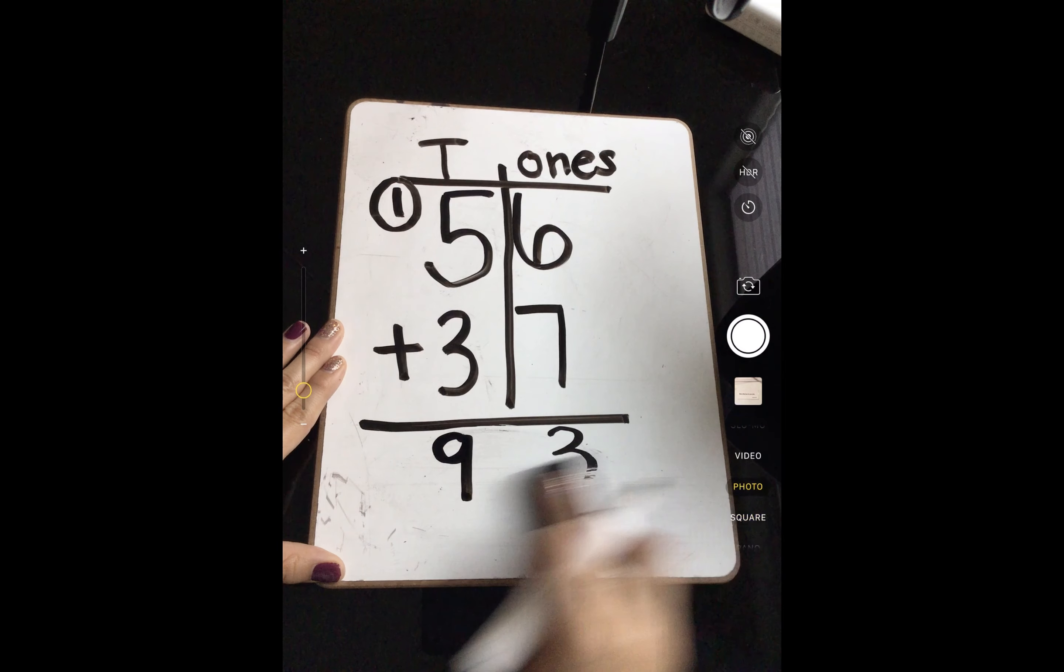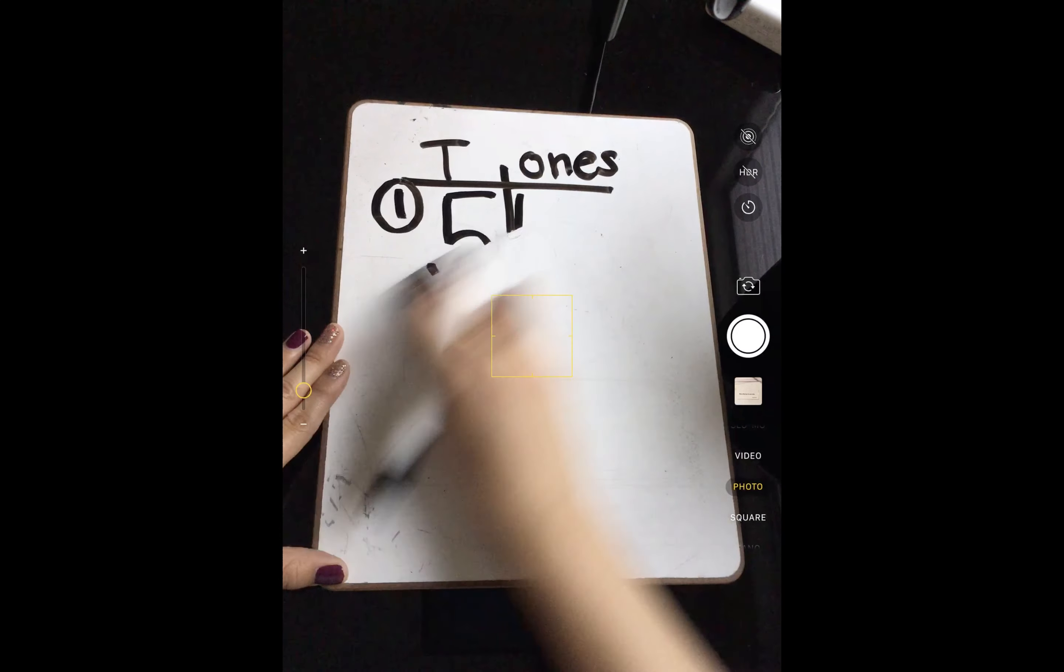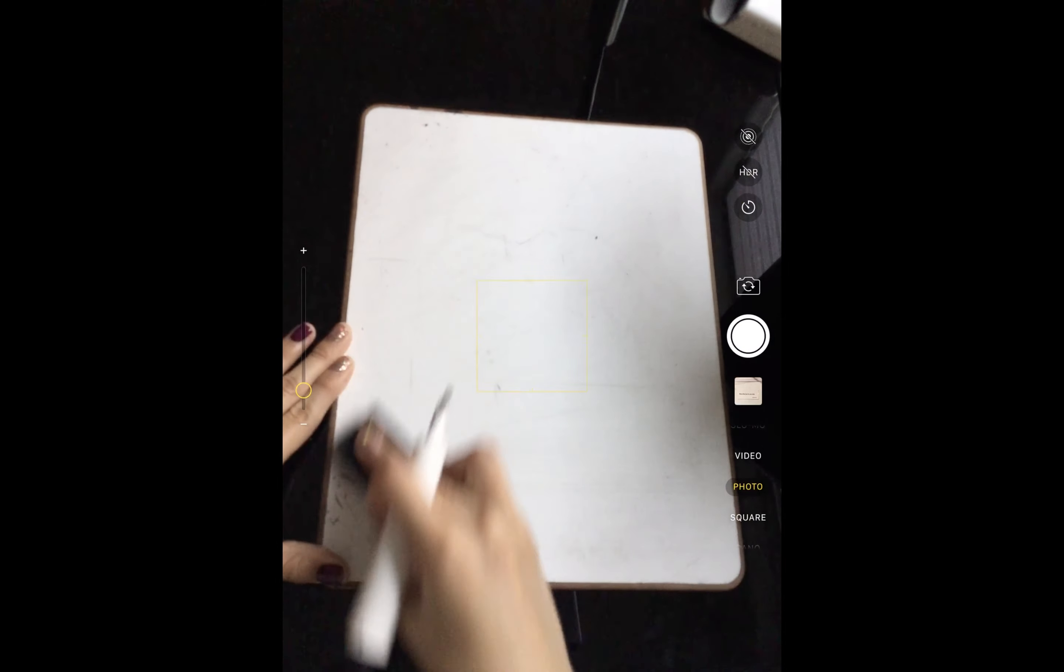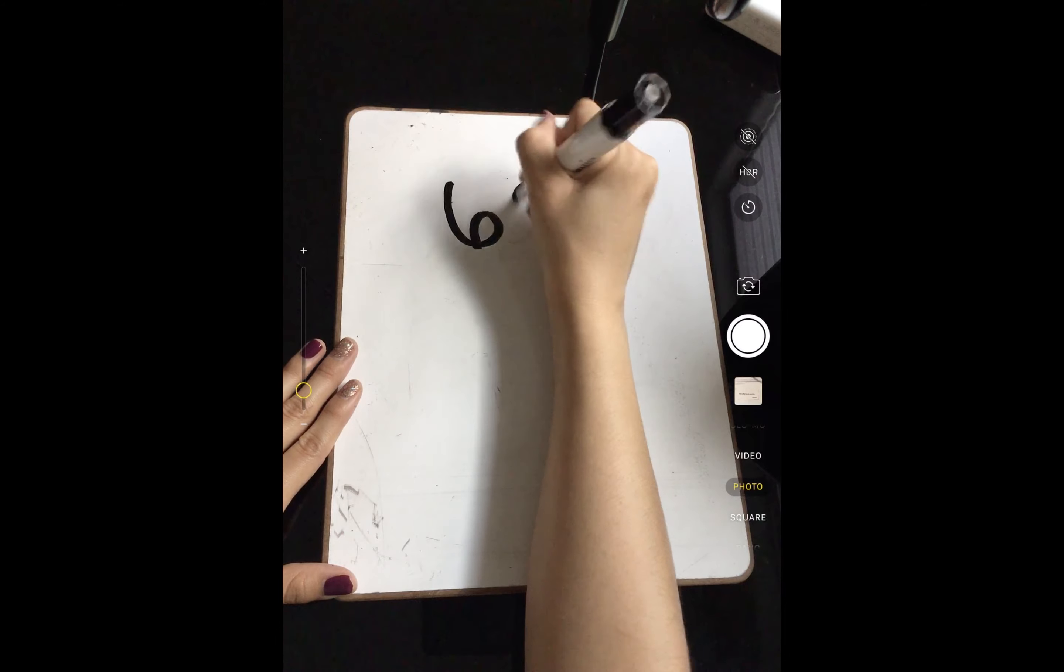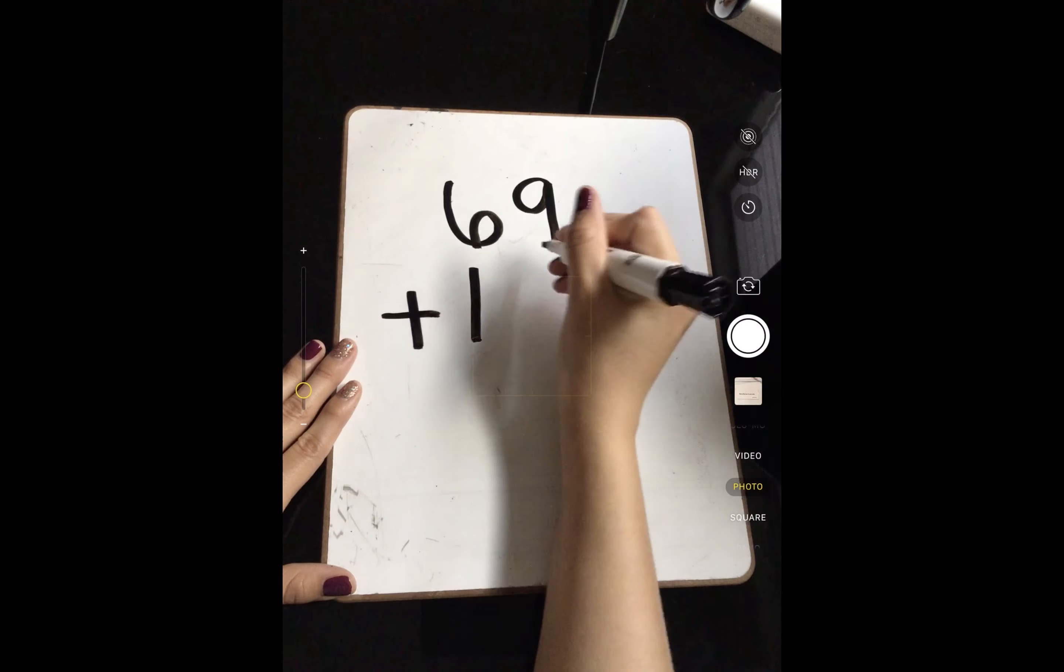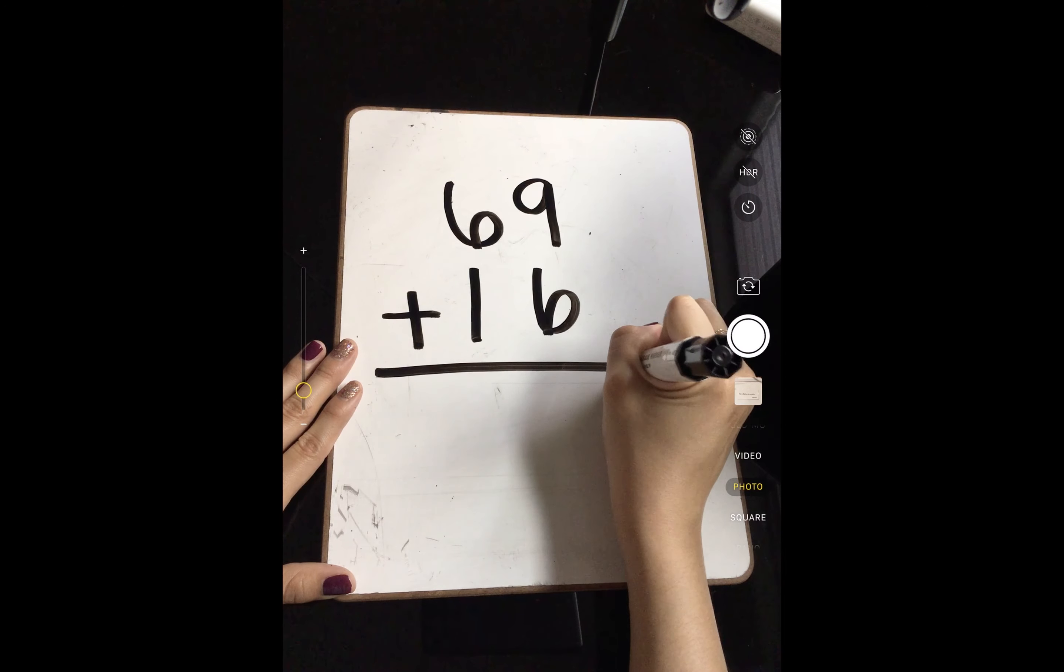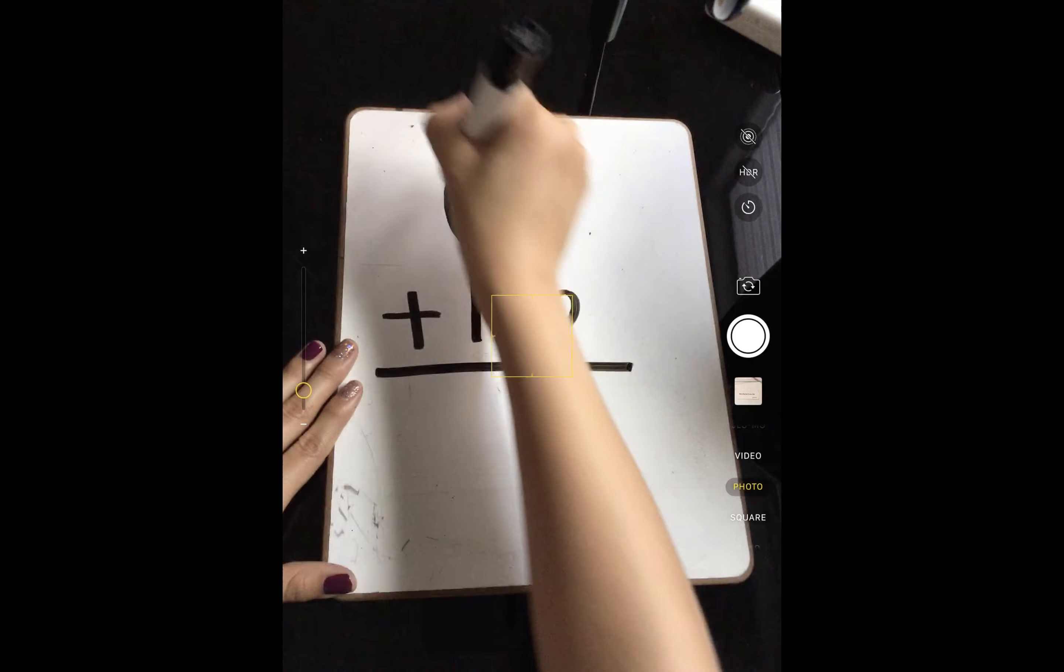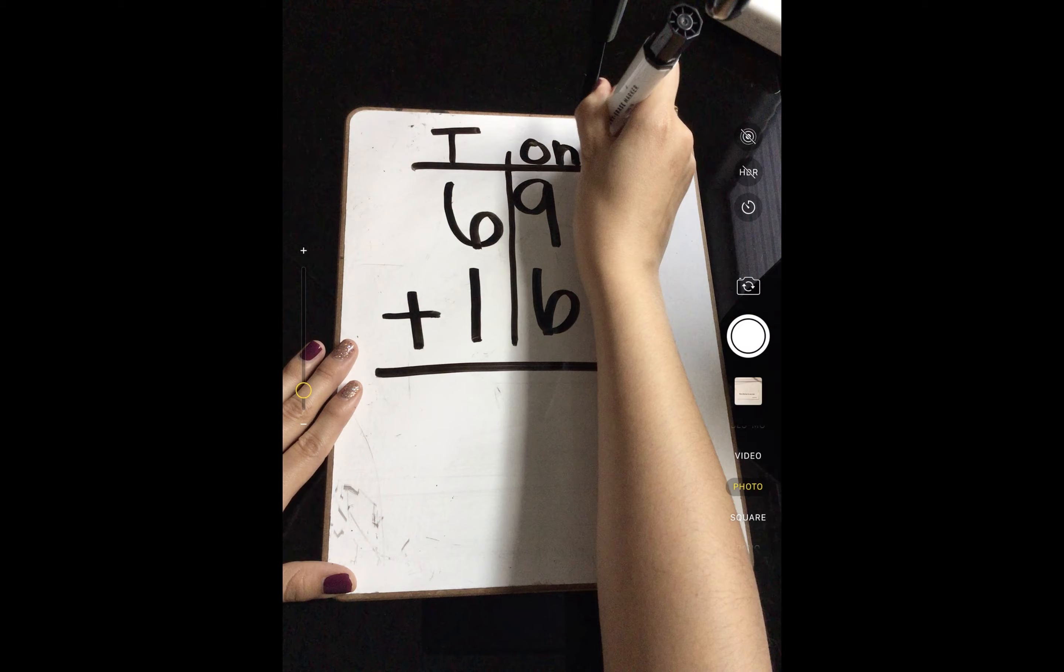We're going to do one more, just like that, where we have to carry over that 1. My next problem is going to be 69 plus 16. So remember, if I have to make my columns here, that's okay.